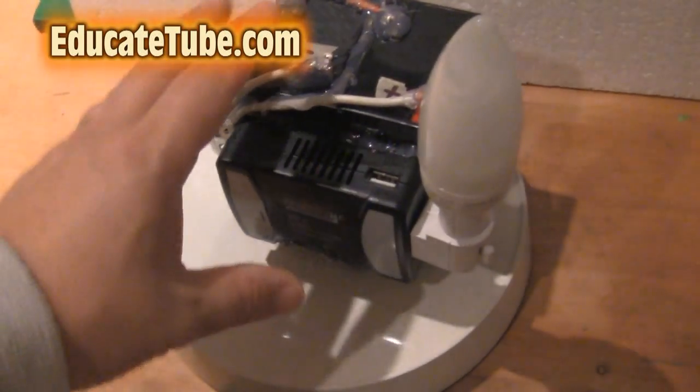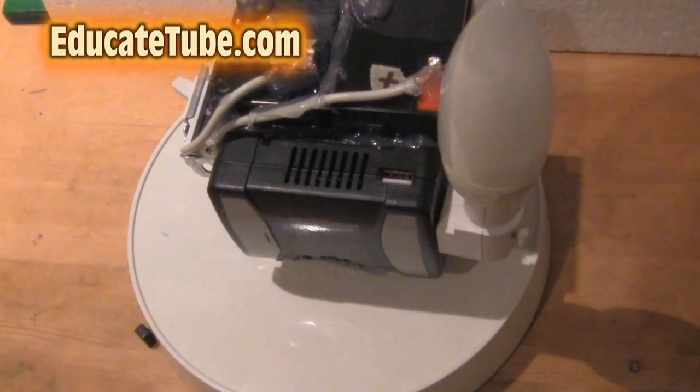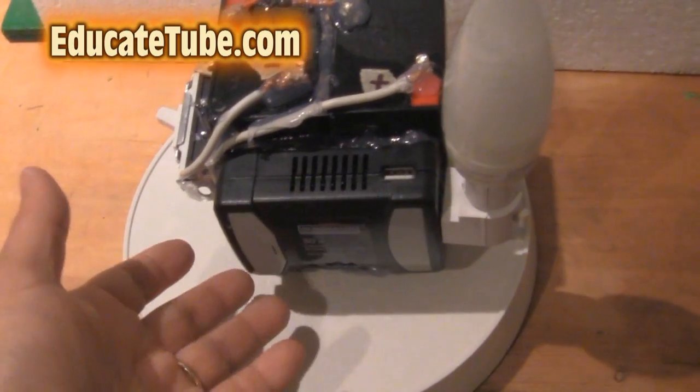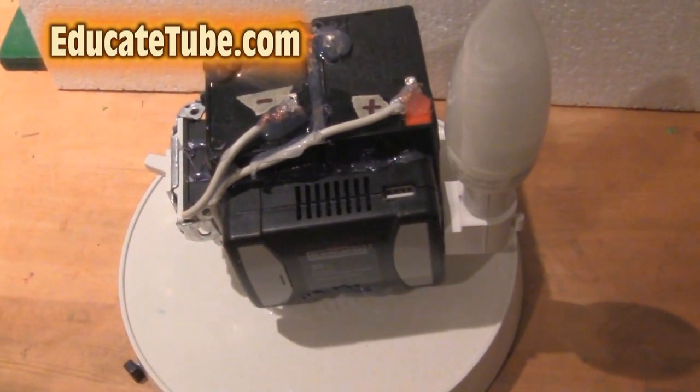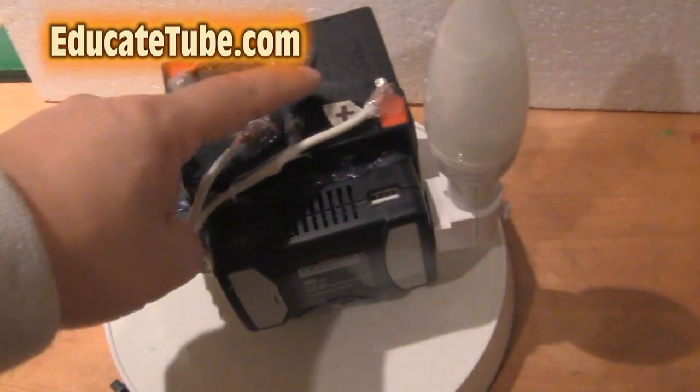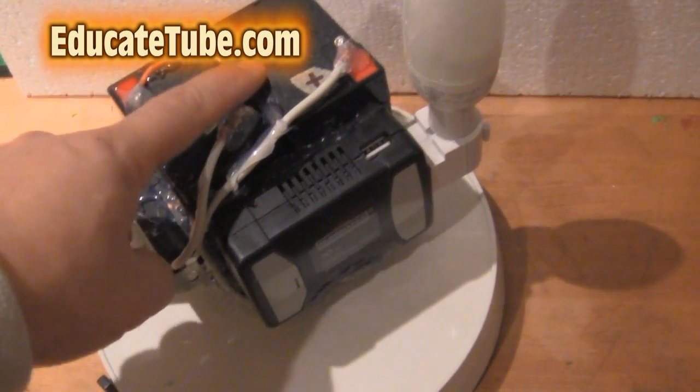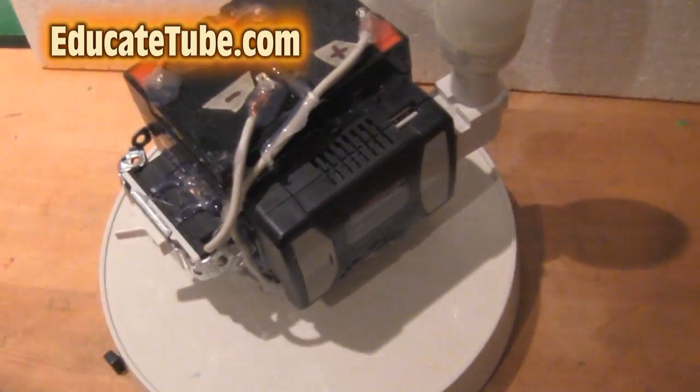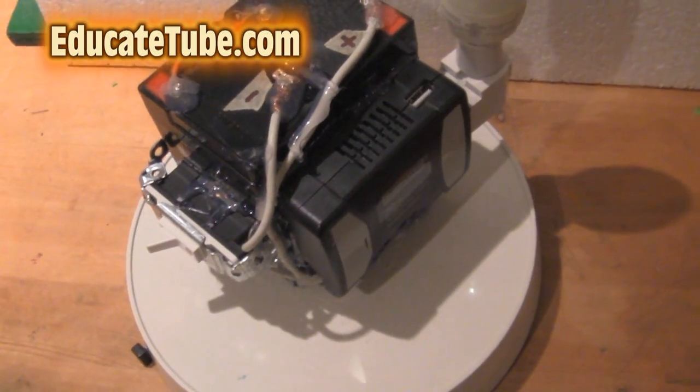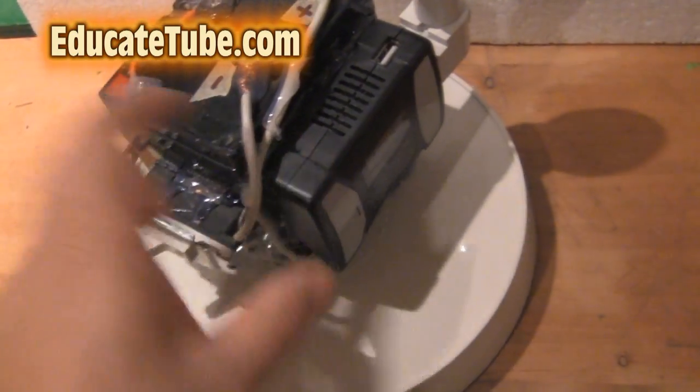Welcome back to EducateTube.com. I just built a 12-volt battery pack system. The world's smallest, do-it-yourself battery pack system. It comprises two 6-volt batteries arranged in series, as you can see here. So now it's a 12-volt. The good thing about a 12-volt battery is that you can hook up to an inverter.